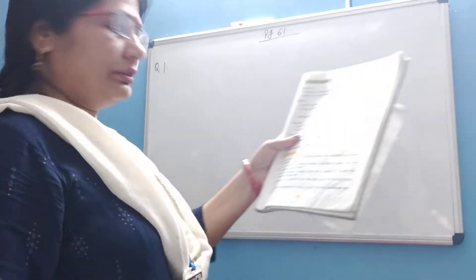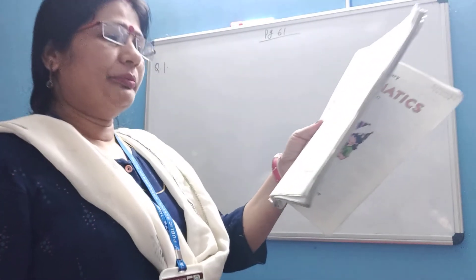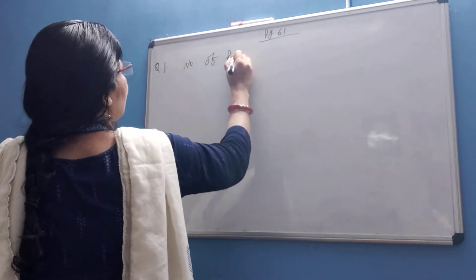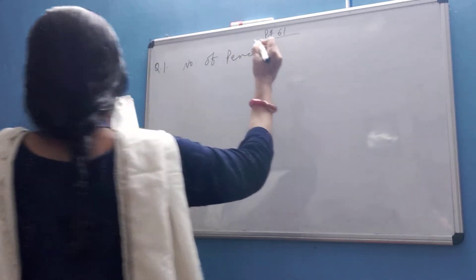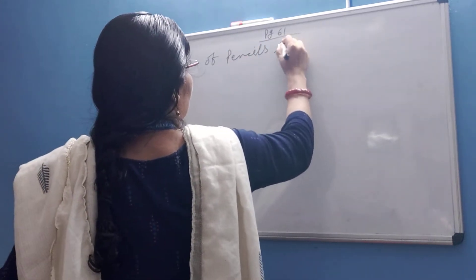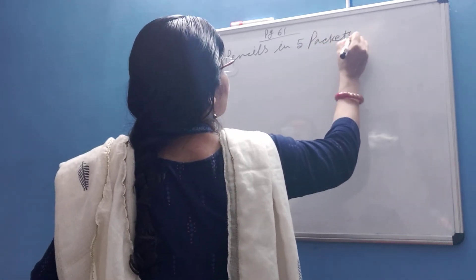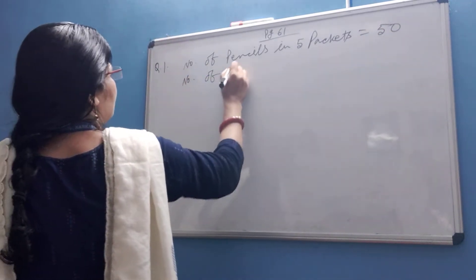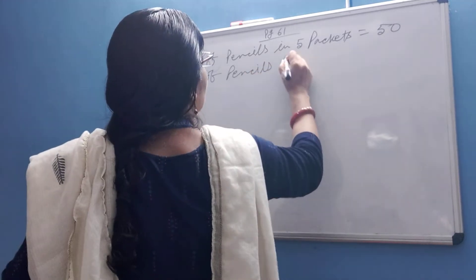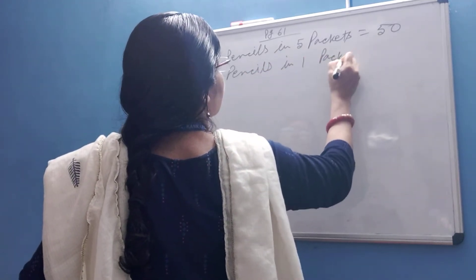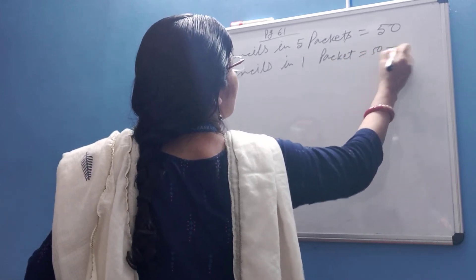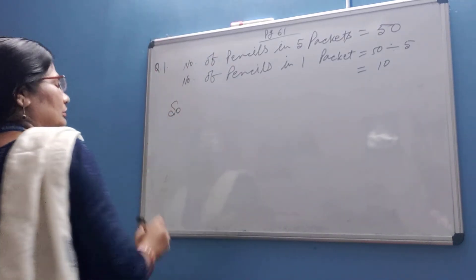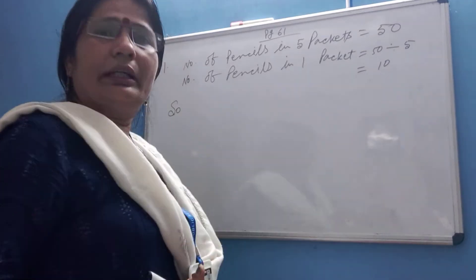50 pencils are equally packed in 5 packets. How many pencils are there in each packet? Number of pencils in 5 packets is equal to 50. Therefore, the number of pencils in one packet is equal to 50 divided by 5 is equal to 10.